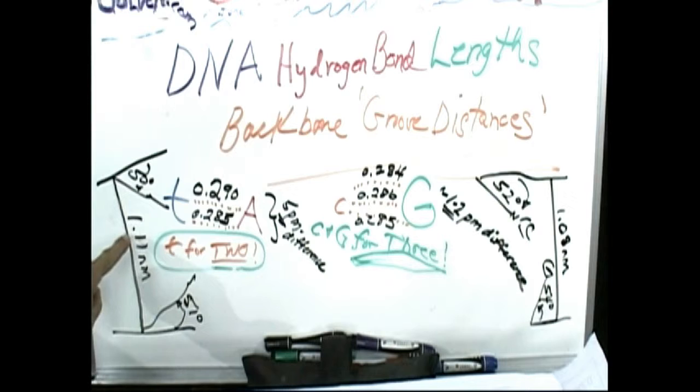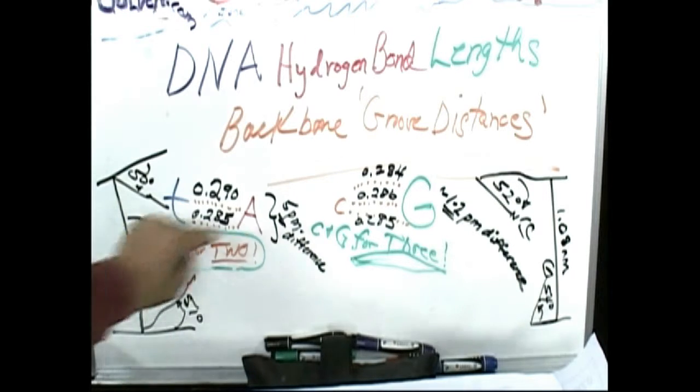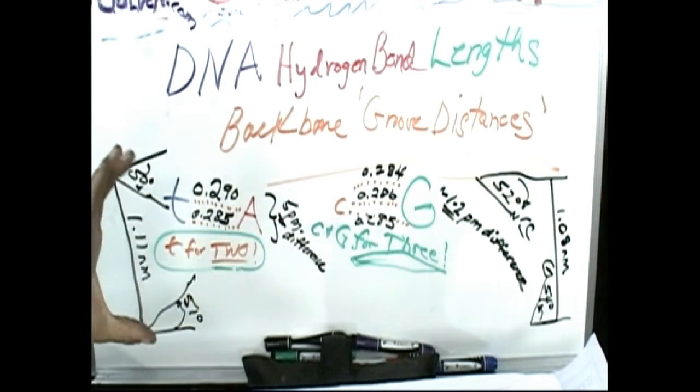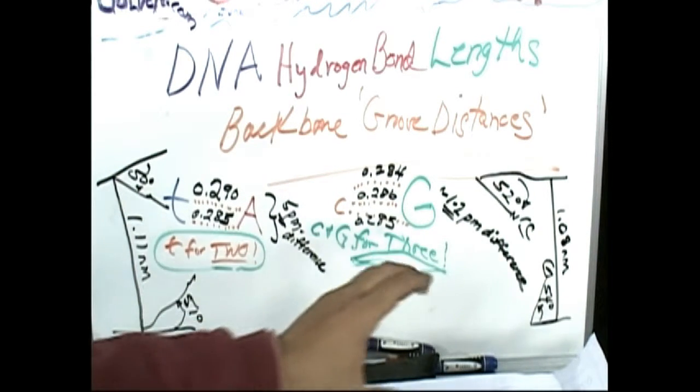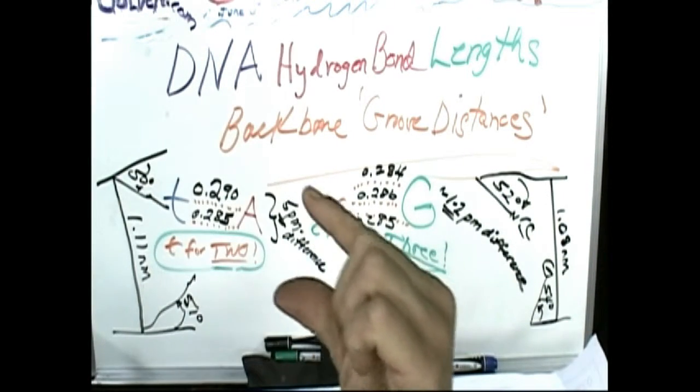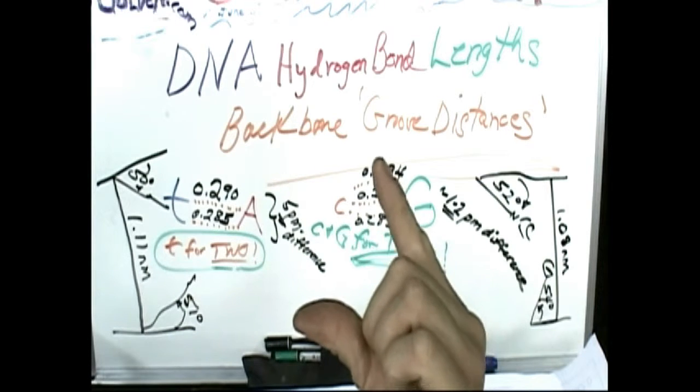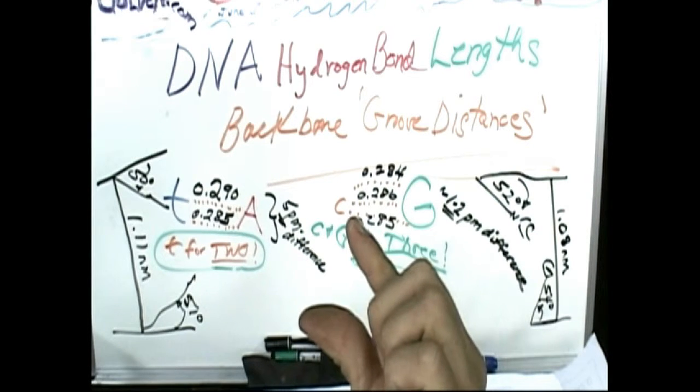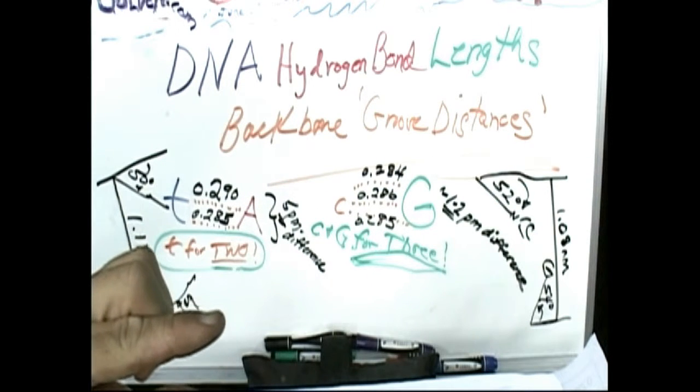The lengths are different: 1.11 nanometers versus 1.08 nanometers distance from the backbones. The angles are different: 50, 51 degrees the way these come into the ends. This is what we're going to draw now. 50, 51 almost the same angle, but over here you got a 52 and a 54. It's actually coming in this way, and it's going to be bigger strain from the sugar backbone.